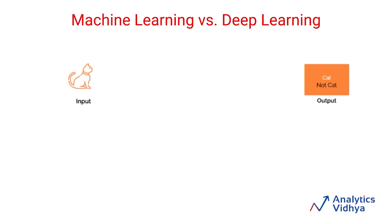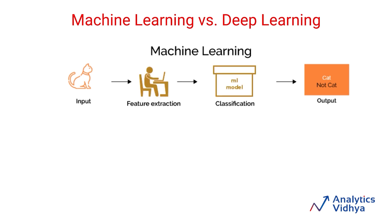Let us say you want to build a classifier which looks at an image and classifies the image as 'cat' if it has a cat, or 'not cat' if the image does not have a cat. If you were solving this problem using a traditional machine learning approach, you will follow a process like this: you will take the image and build a set of features from it, then provide these features to your classification model, which will output whether it is a cat or not cat. In this case, the more features you can build or think of, the better your model will be.